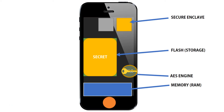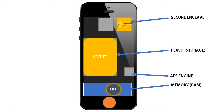The file then gets stored in the flash. Now, the key itself could be intercepted when it travels from the enclave to the engine.